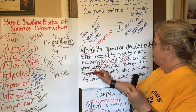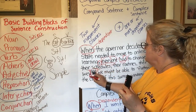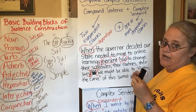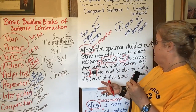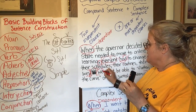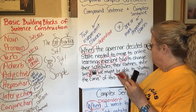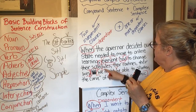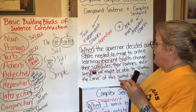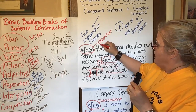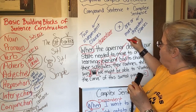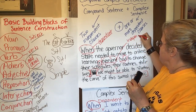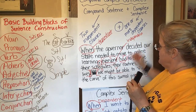So then we have 'and' — if I take that out, this should stand by itself too. 'We might be able to flatten the curve of this surreal pandemic.' Can I say that by itself? Yes. So here's my subject 'we,' and then 'might be able to flatten the curve' is my verb phrase.